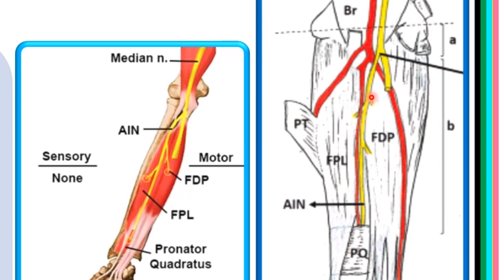This nerve will run down on the surface of the interosseous membrane and will not run alone — it runs with a branch of the ulnar artery called the anterior interosseous artery. Here is the anterior interosseous artery running alongside the anterior interosseous nerve. These two structures run on the surface of the interosseous membrane between two muscles: flexor pollicis longus on the lateral side and flexor digitorum profundus on the medial side. The nerve runs distally and ends by entering the deep surface of the pronator quadratus.